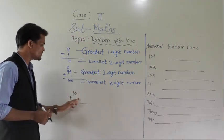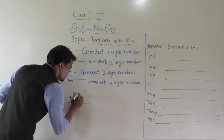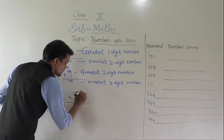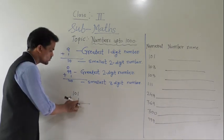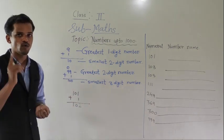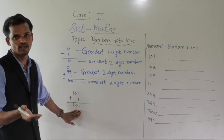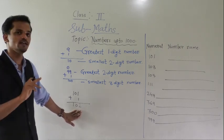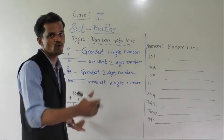If we add 1 into 101, then 1 plus 1 is 2, so 102. This number is 102. If we again add 1 into 102, we will get 103. If we again add 1 into 103, we will get 104, and so on.